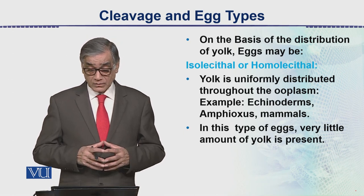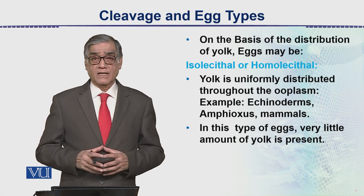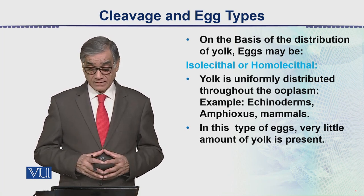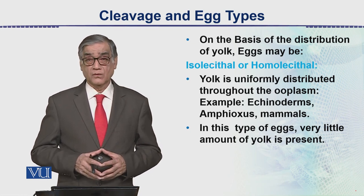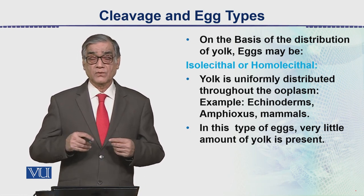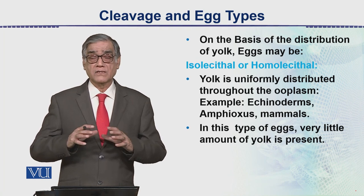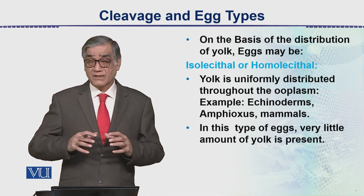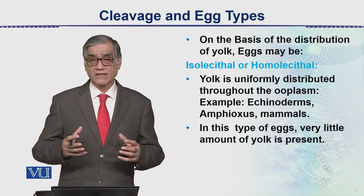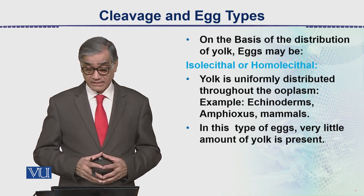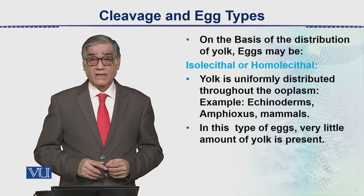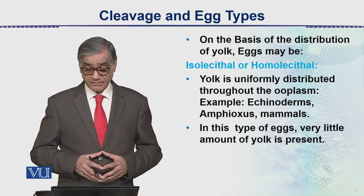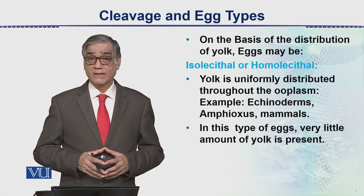Now on the basis of distribution — we discuss how many types of eggs there are based on yolk distribution. One type is called isolecithal or homolecithal — when the yolk is distributed in equal amounts throughout, meaning there is no concentrated form of yolk, unlike what we see in a hen's egg. Examples of isolecithal or homolecithal eggs are amphioxus or mammals, and also echinoderms.